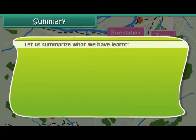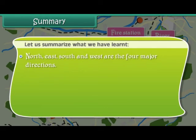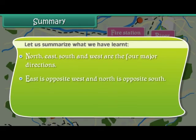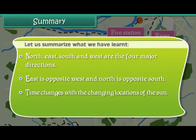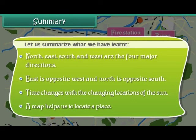Let us summarize what we have learned. North, East, South, and West are four major directions. East is opposite West and North is opposite South. Time changes with the changing locations of the sun. A map helps us to locate a place.